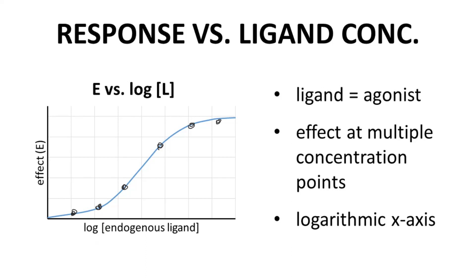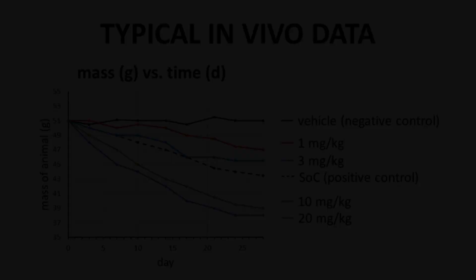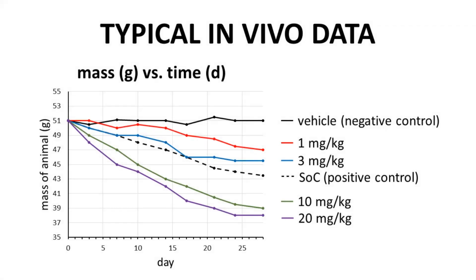In vivo response curves tend to look a bit differently. Here is a typical set of hypothetical in vivo data. Let's say we are developing a weight loss drug and we are dosing the drug in obese mice as our animal disease model for 28 days, as seen on the x-axis. The biomarker we are following is mass of the mouse — that's our y-axis. We could follow other biomarkers like plasma glucose, but here we are just looking at mass of the animal.